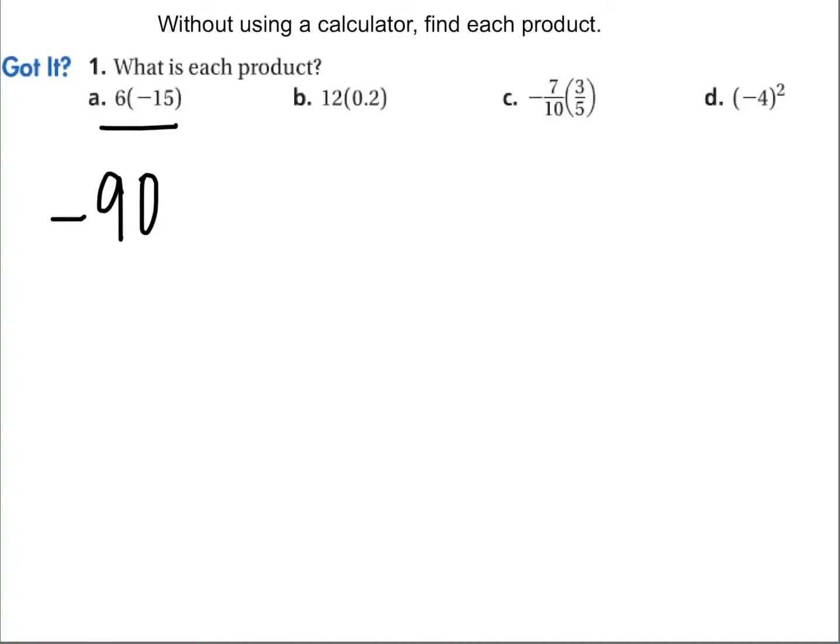Letter B, positive 12 times positive 0.2 gives us positive 2.4.